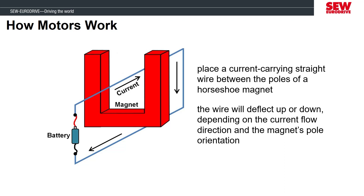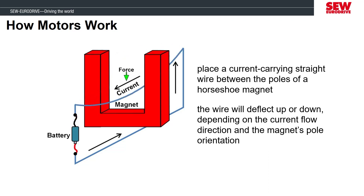When we connect these pieces like shown in the picture, we can cause the wire to flex up or down. The direction the wire moves depends on the north and south polarity of the magnet and how the ends of the wire are connected to the positive and negative terminals of the battery. If we swap the polarity of the battery, we can cause the wire to flex in the opposite direction, because we have caused the original direction of current flow to reverse.